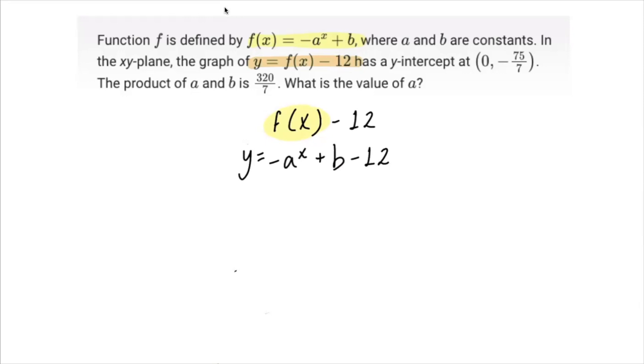That function has a y-intercept at the point x equals 0, y equals negative 75 sevenths. Next you're going to plug in the point that is given as the y-intercept. So x is substituted in as 0 and your y value is negative 75 sevenths.